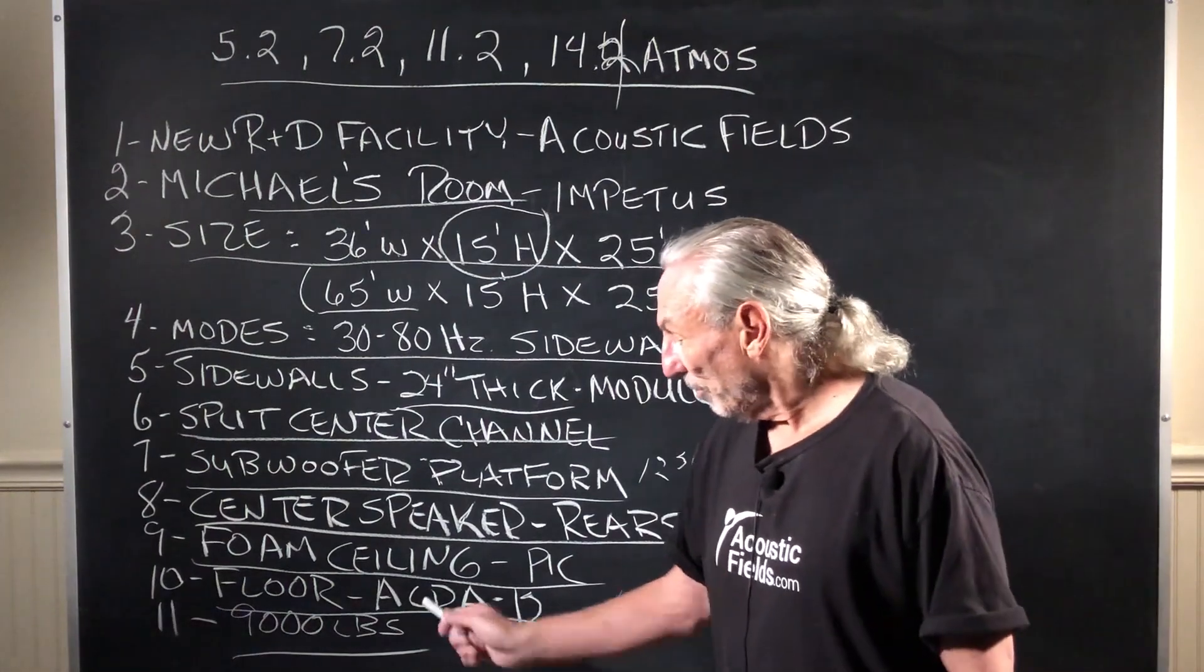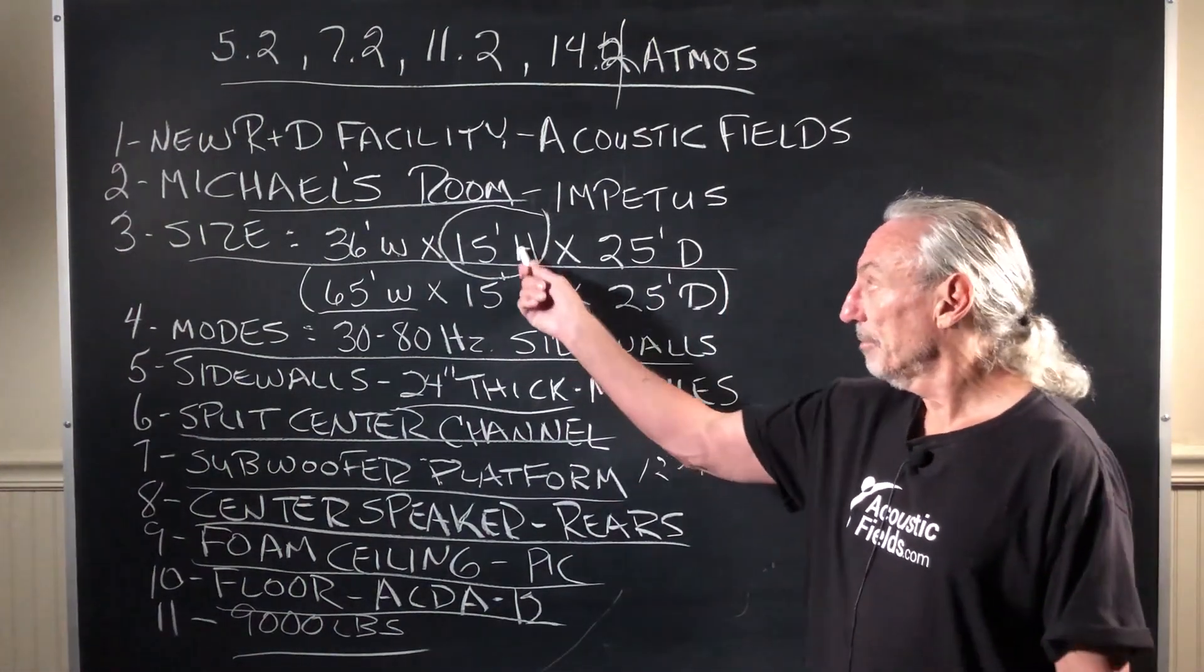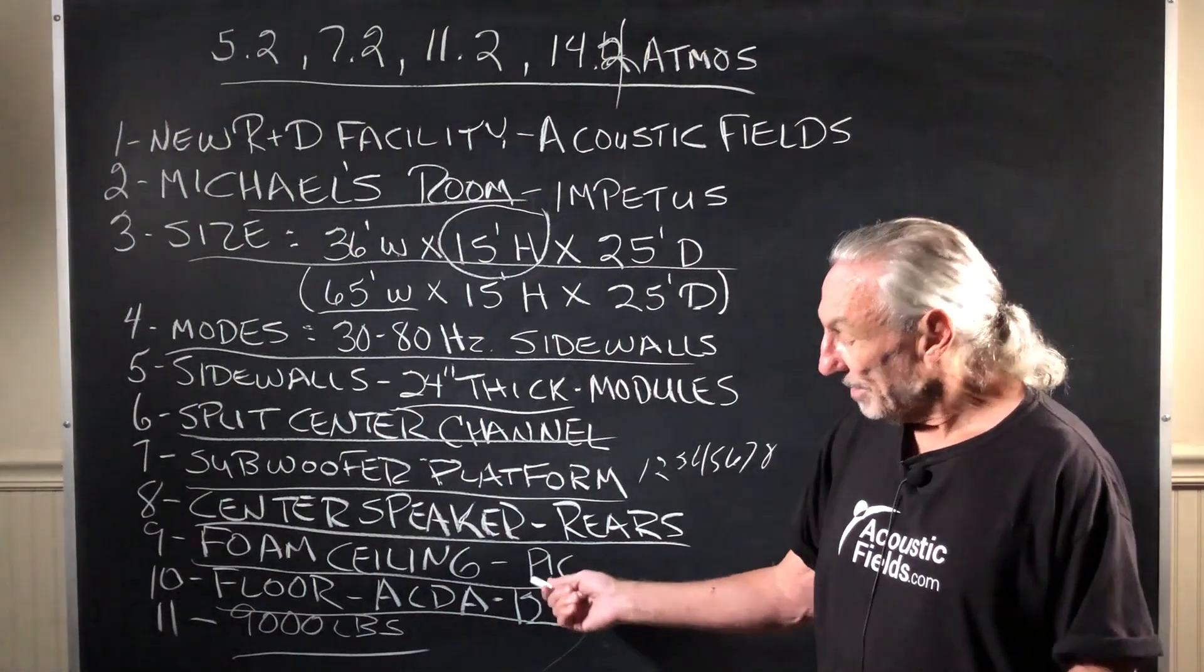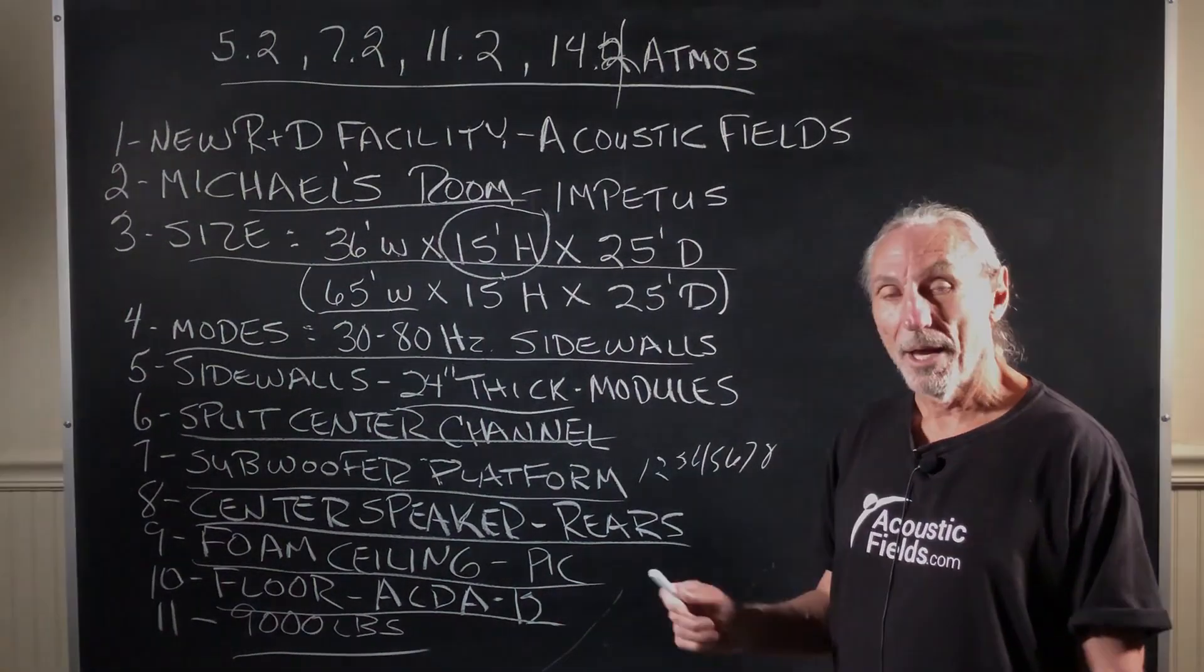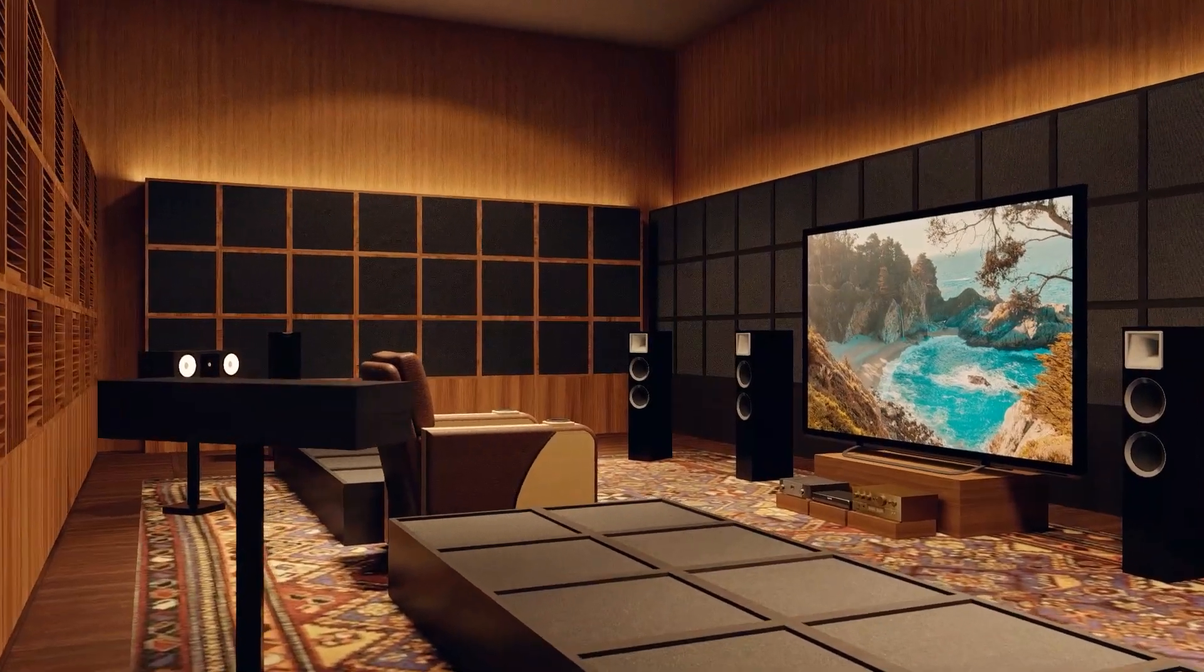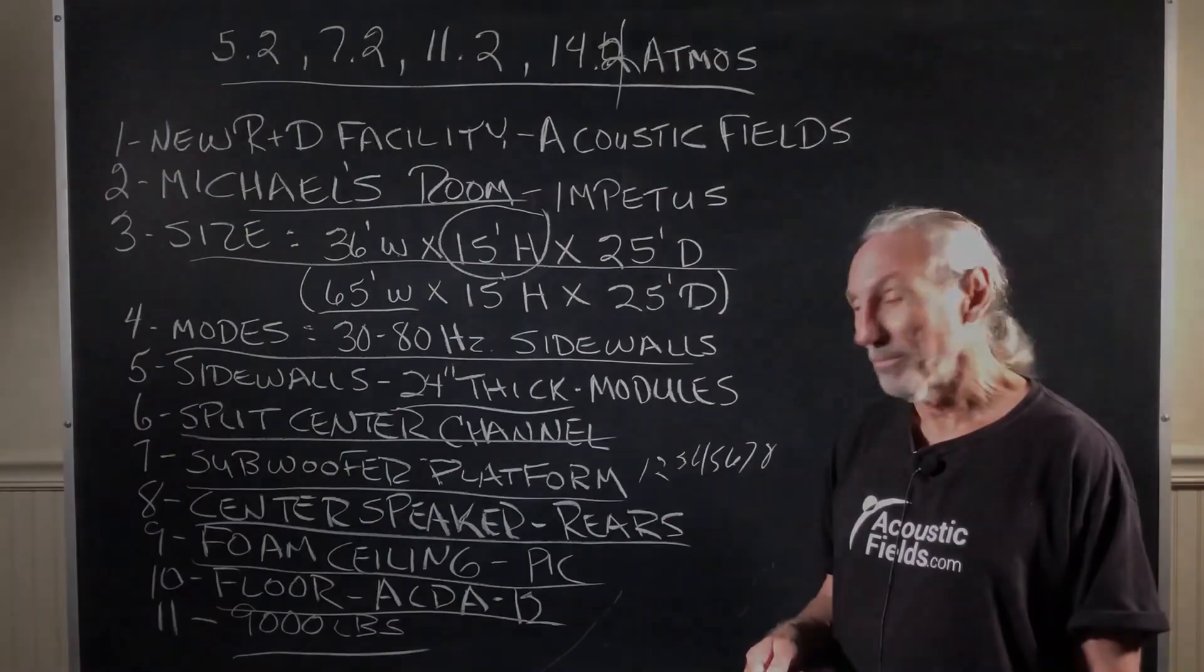All right. So the floor, floor to ceiling with 15 foot, we still have some issues. So the bottom line here is we need to treat those issues. And our ACDA 12 modules on the floor on both sides of the listening position will do that.